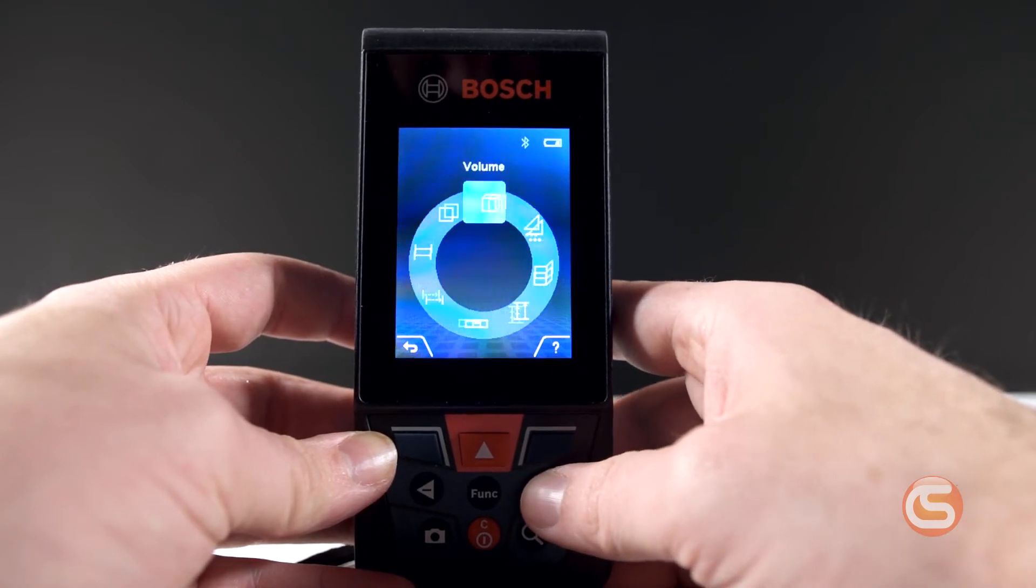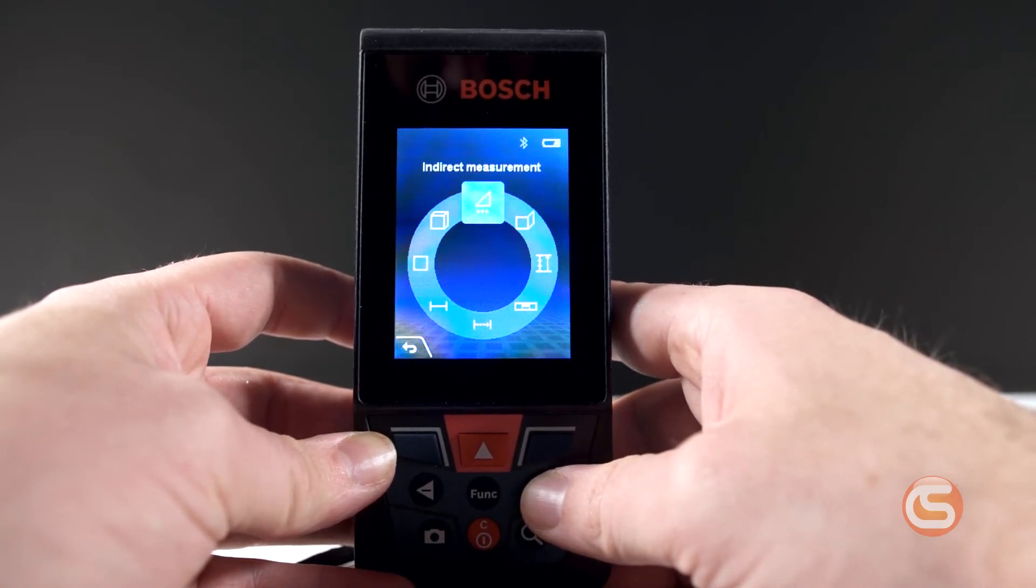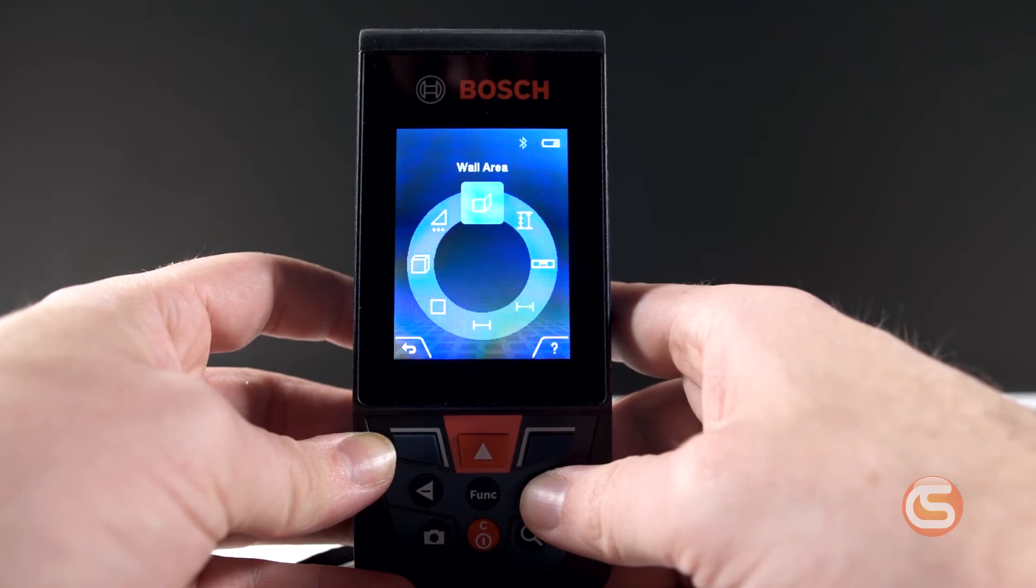The Blaze 400 includes 11 pre-programmed measurement modes, including area, volume, angle, and multi-surface area. And the built-in tilt sensor displays 360 degree measurements.